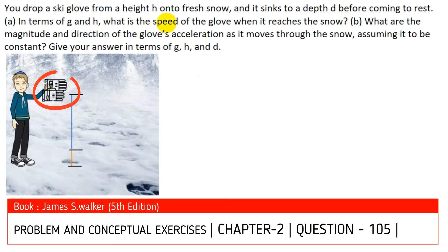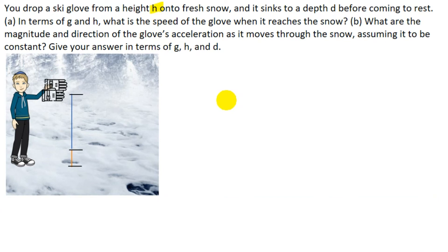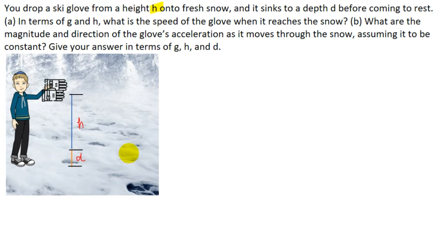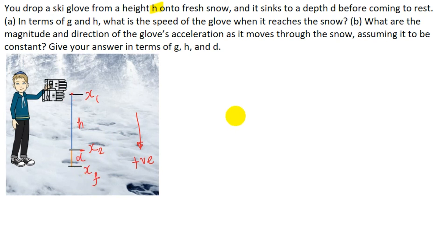Next problem: you drop a glove from height h onto fresh snow, and the glove sinks to a depth d before coming to rest. On the figure, h is the drop height and d is the depth into snow. There are two parts: part A finds the magnitude and direction of the glove's velocity as it reaches the snow, and part B finds the acceleration as it moves through the snow assuming constant acceleration.